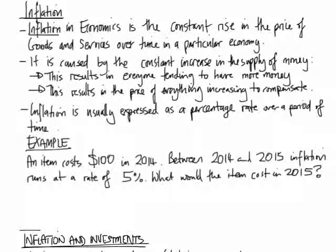Inflation in economics is the constant rise in price of goods and services over time in a particular economy. What causes that? It's caused by the fact that the supply of money in economies is always increasing, either by printing money or more people entering it. This results in everyone tending to have more money, so the price of everything is going to increase to compensate for that.